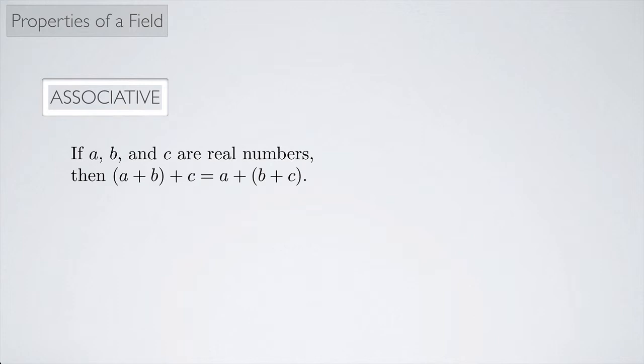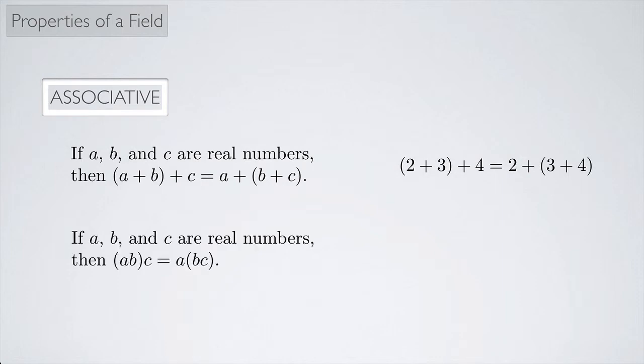Associative. So if A, B, and C are three real numbers, then A plus B plus C is the same thing as A plus B plus C. In other words, you can move the parentheses around. 2 plus 3 plus 4 is the same thing as 2 plus 3 plus 4. Again, nothing that's terribly profound, but we do need this property. Same thing with multiplication. We can move the parentheses around through multiplication. And then we would get something like this. For example, 2 times 3 times 4 is the same thing as 2 times 3 times 4.